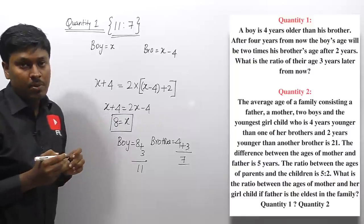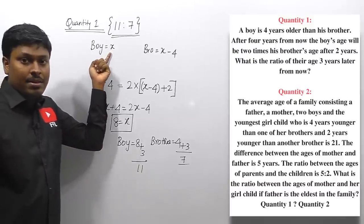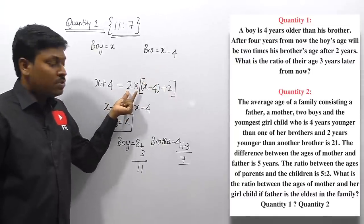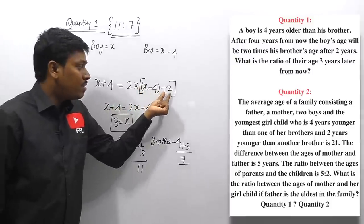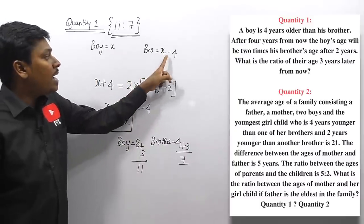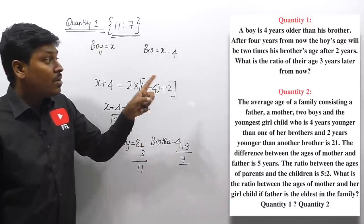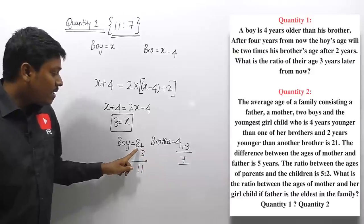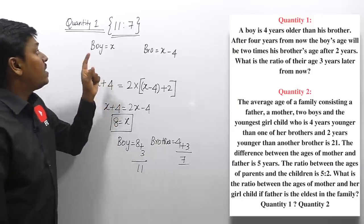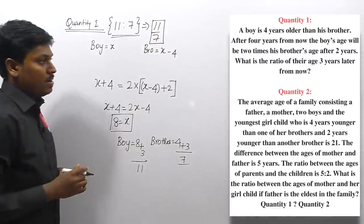So quantity one gives a ratio of 11:7. Let me recap: boy age = x, brother = x − 4. After 4 years the boy's age equals twice the brother's age after 2 years. Solving gives x = 8 (boy) and 4 (brother). Three years later: 11 and 7, ratio = 11:7.